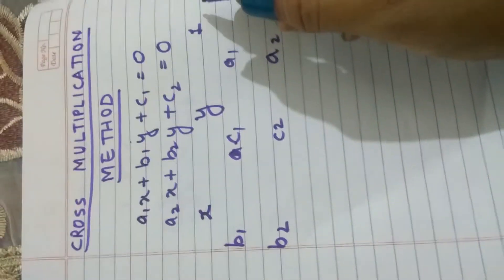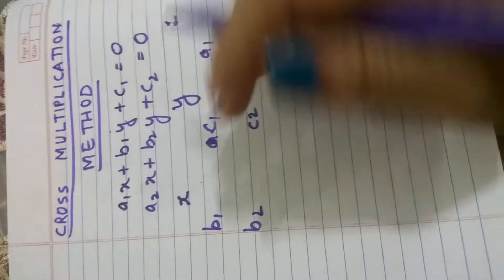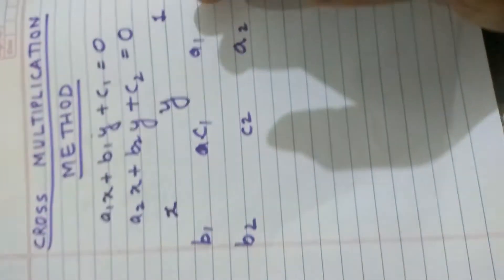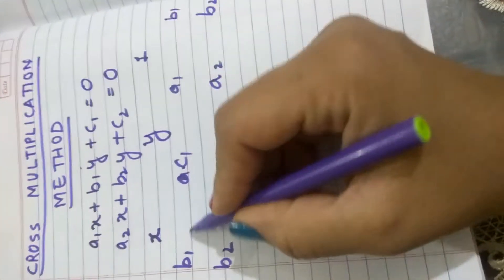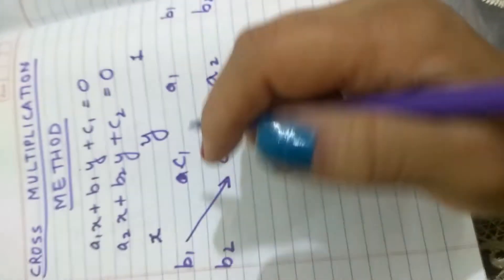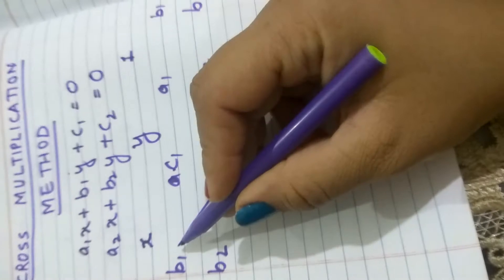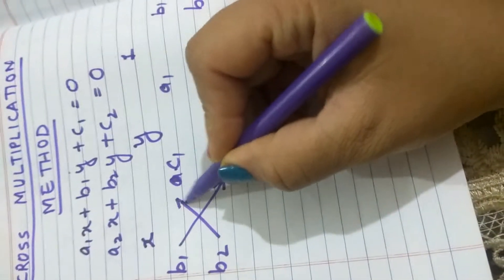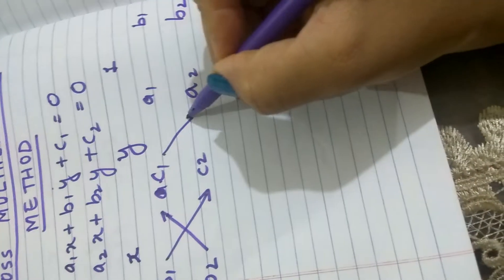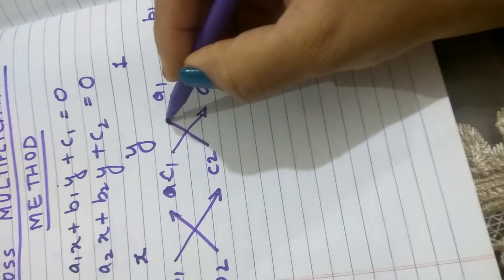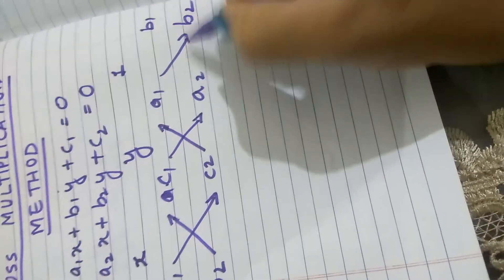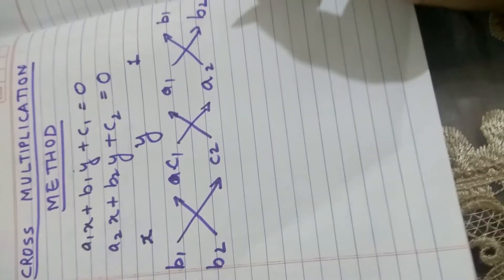First we will write x here, then y, then 1 for constant. Then b1, b2, c1, c2, a1, a2, and again b1, b2. Then we have to draw arrows, forward pointing arrows from here to here and here to here which makes a cross multiplication kind of sign. That's why this method is called the cross multiplication method.